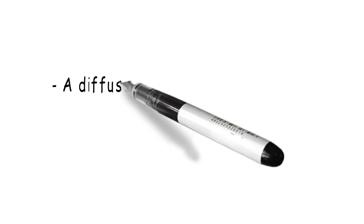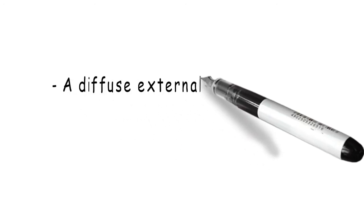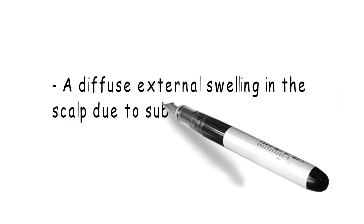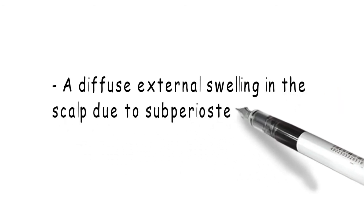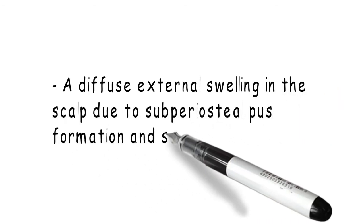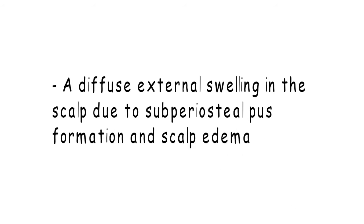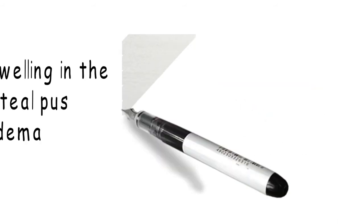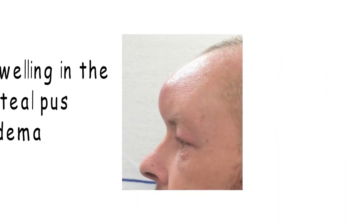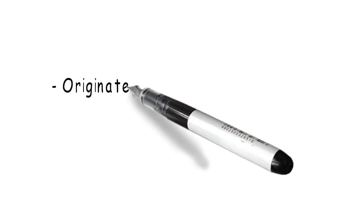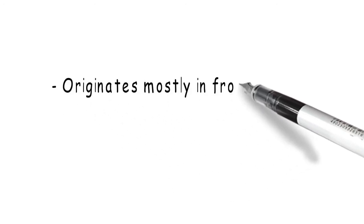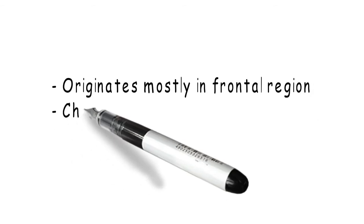Pott's Puffy Tumor is a diffuse external swelling in the scalp due to subperiosteal pus formation and scalp edema. It was first described by the English surgeon Sir Percivall Pott. It mostly originates in the frontal region and is characterized by osteomyelitis of the frontal bone.